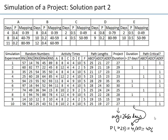Finally, we compute the probability that each path is critical. Path A→B→C→F is critical 40% of the time, path A→D→C→F is critical 0% of the time, and path A→D→E→F is critical 70% of the time. With 10 experiments, we're getting reasonably accurate estimates, and we could do further statistical analysis to compute confidence intervals. This concludes our third simulation example.